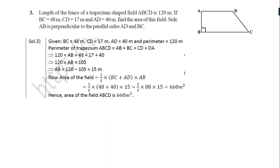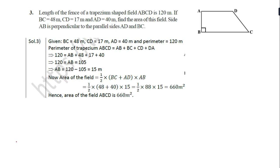Let me verify: given BC is 48 meter, CD is 17 meter, AB is 40 meter, perimeter is 120 meter. Perimeter of trapezium ABCD equals AB plus BC plus CD plus DA. So 120 equals AB plus 48 plus 17 plus 40. Therefore AB equals 120 minus 105, which is 15. Putting the value: half into (48 plus 40) into 15. Cancelling gives 44, so 660 meter square is the correct answer.